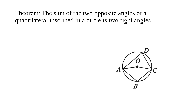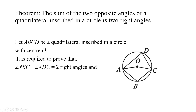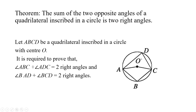This is the figure: a circle ABCD with center O. It is required to prove that angle ABC plus angle ADC equals two right angles. Also, the sum of angle BAD and angle BCD is two right angles.